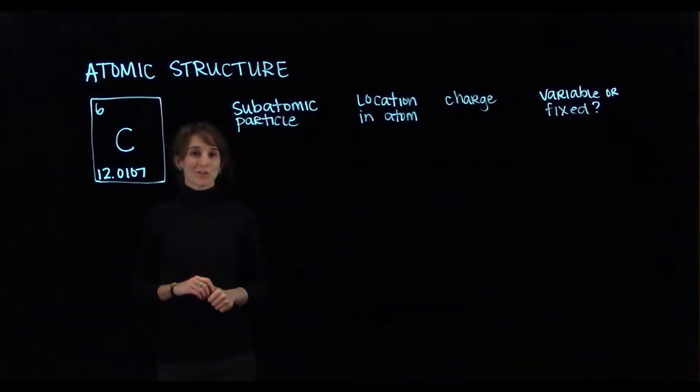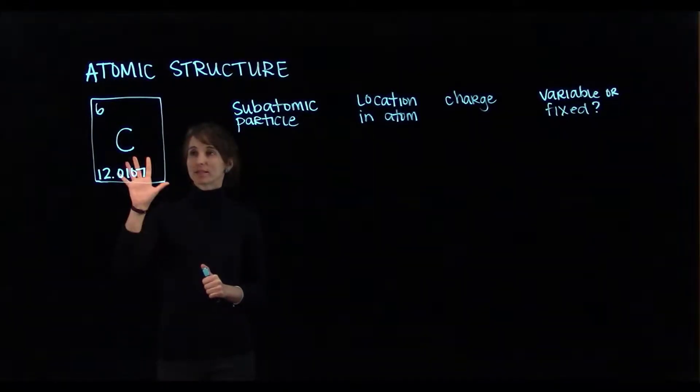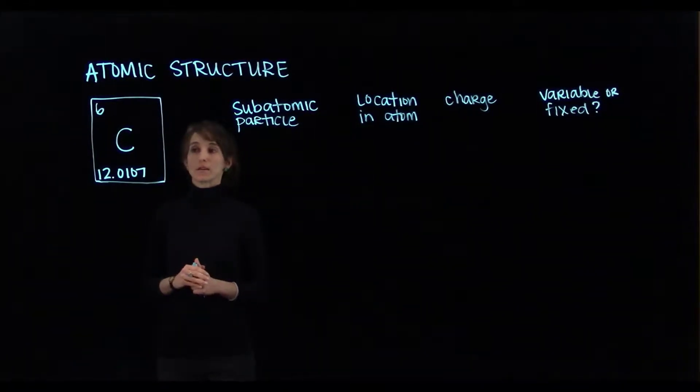Let's talk about atomic structure using a carbon atom as an example. If you look at a periodic table, this is the type of entry that you would see for carbon.